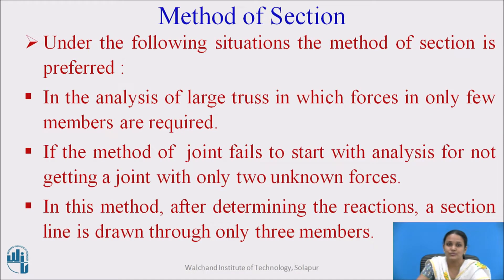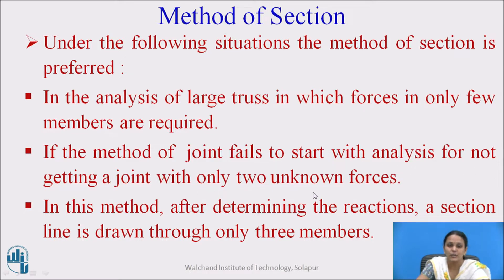Method of section is used when we have to determine only a few force members from the entire truss. It is also used when we are not able to solve the forces in members of the truss by using the method of joint — if the method of joint fails to start with the analysis for not getting a point with only two unknown forces. In this method, after determining the reactions, we draw a section line through the members in which we have to find out the forces. The section line should pass only through three members — keep that in mind.